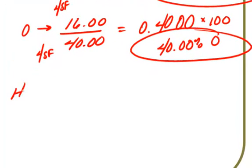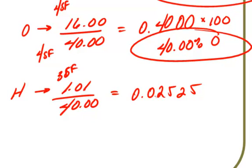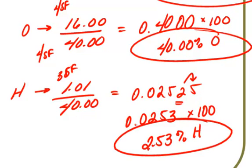And then finally, hydrogen. Hydrogen has the mass of 1.01 and we divide that by 40.00 and we get 0.02525. Here we only have three significant figures, so we'll go to our third significant figure, the 2, look to the right, and the 5 tells the 2 to become a 3, so we have 0.0253. Multiply this by 100 to make it a percent and we have 2.53% because of the hydrogen.